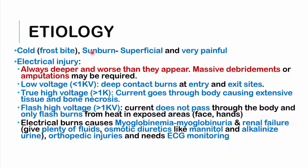Electrical burns are always deeper and worse than they look. They may necessitate massive debridement or even amputation. If someone is electrocuted with less than 1,000 volts, there will typically be deep contact burns at the entry and exit points of current. If voltage is greater than 1,000 volts, this is a true high voltage electrocution, with the current passing through tissues causing extensive necrosis, including bone necrosis.